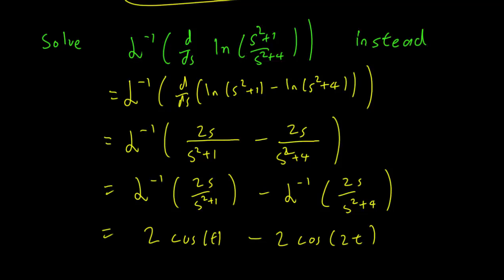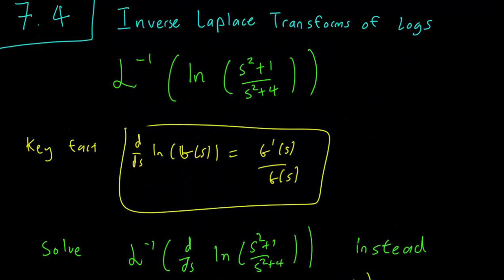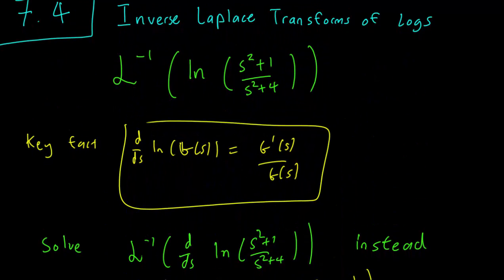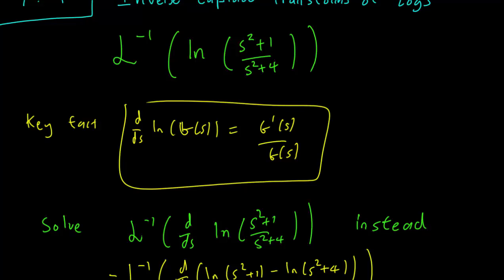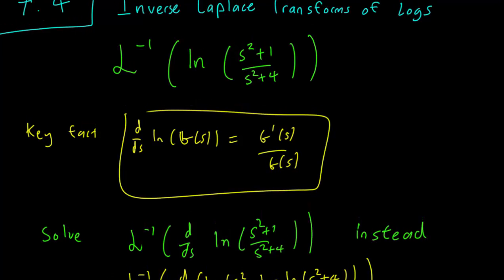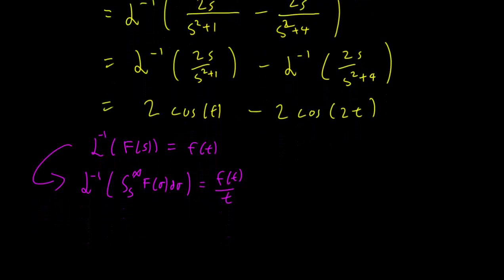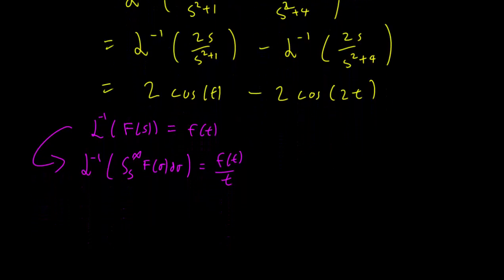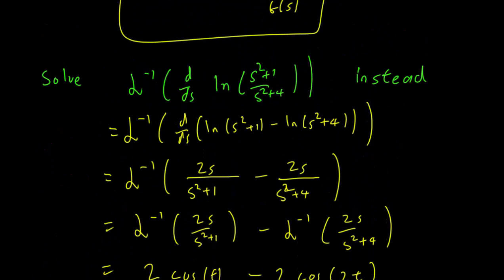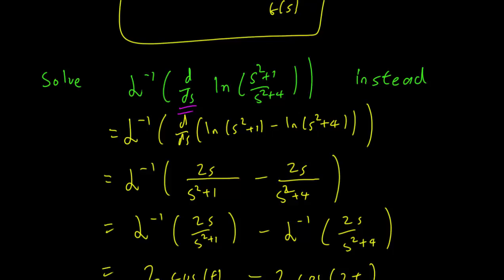We've solved the derivative of log((s²+1)/(s²+4)), but remember, that wasn't our original problem. We instead want to find the inverse Laplace transform of log((s²+1)/(s²+4)), so we need to eliminate the derivative. To eliminate derivatives, we have to use the integral formula, because according to the fundamental theorem of calculus, integration cancels out derivatives. We need to use this integration formula to get rid of this derivative.